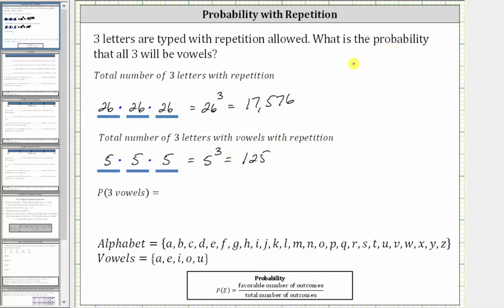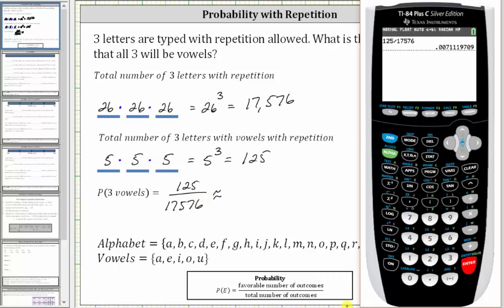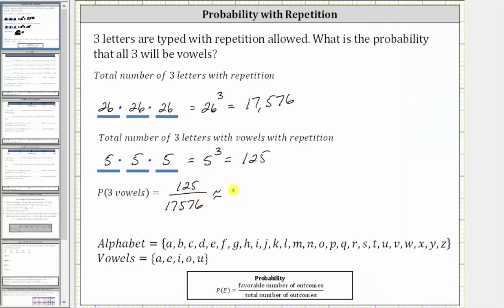Therefore the probability that all three letters will be vowels when three letters are typed with repetition allowed is equal to 125 out of 17,576. Let's also show the decimal and percentage. To four decimal places, the quotient is approximately 0.0071, which is equal to 0.71%.